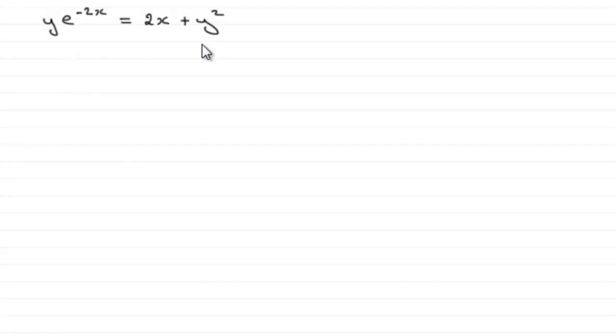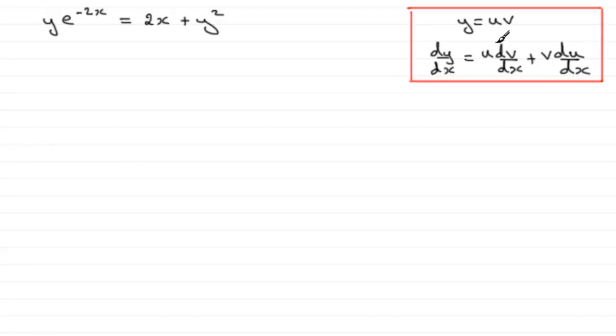Now when we look at this first term here, y times e to the minus 2x, we're going to need to use the product rule for differentiation. The product rule, remember, is this rule that if you've got y equals two functions of x, u and v say, being multiplied together, dy/dx equals one part times the differential of the other part, and then plus, and then you just do it the other way around.